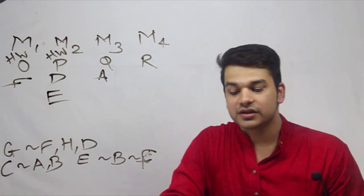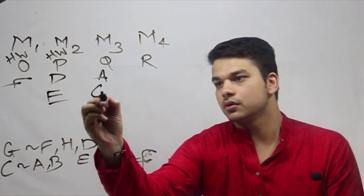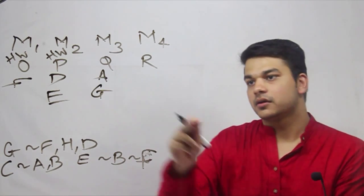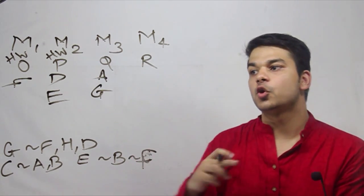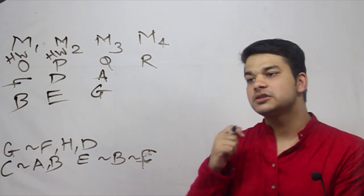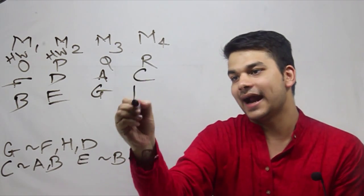It is further given that G is with Q, and B cannot go with R. If B is not on M4, the only option for B is M1, so B will be here. And the only pair which is remaining is going to be C and H.